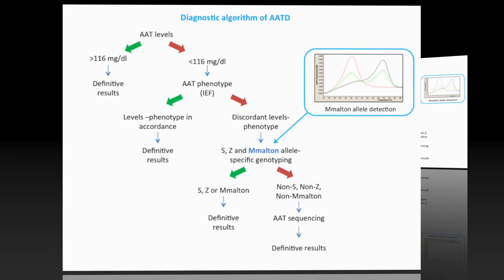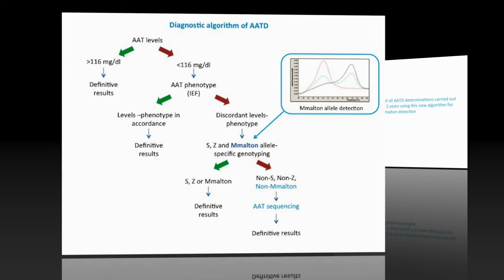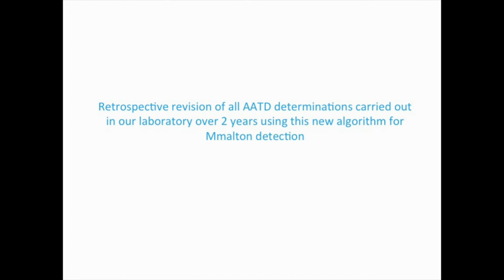We have included it in the diagnostic algorithm of Alpha-1 deficiency as follows: Alpha-1 levels are determined, and samples with levels below the established cutoff are characterized by phenotyping. The M. Malton allele-specific genotyping assay is applied to samples which show one or two M alleles and discordant Alpha-1 levels. In case of discrepancy, samples are analyzed by sequencing of the gene. The aim of this study was to test the utility of this new algorithm for M. Malton detection.